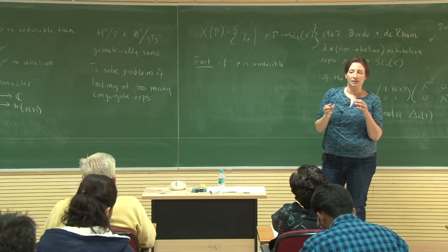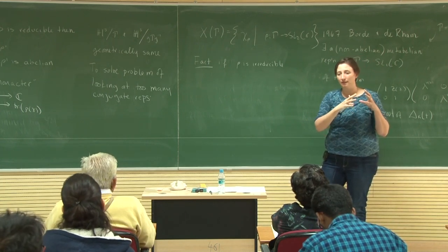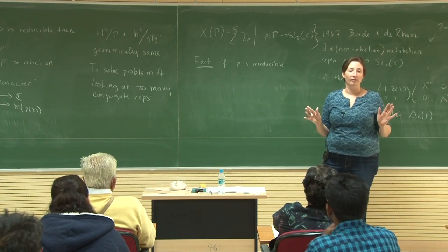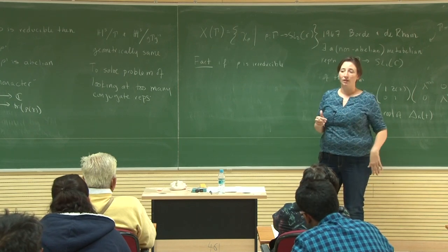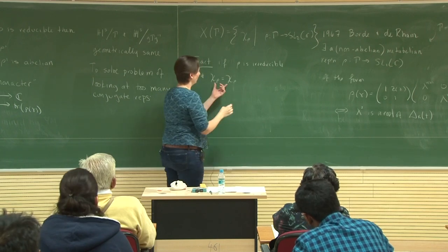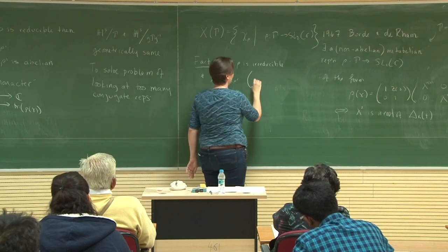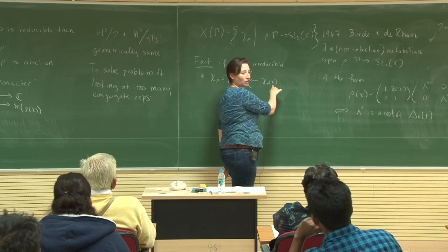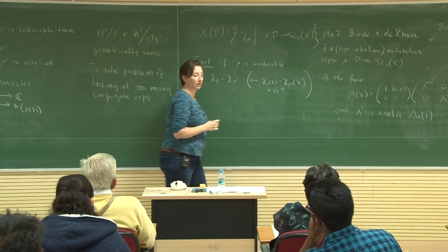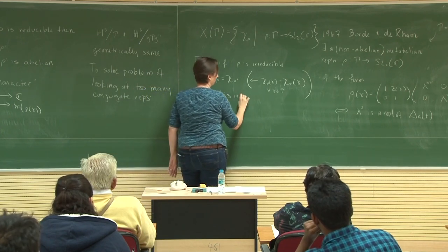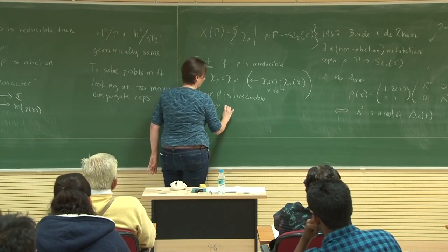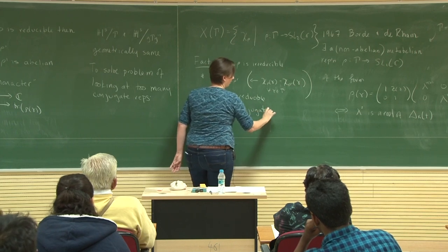A key fact: if rho is irreducible and has the same character function as rho prime — meaning the trace of rho(gamma) equals the trace of rho prime(gamma) for every element — then rho prime is also irreducible and rho and rho prime are conjugate. So for irreducible representations, looking at the character variety is exactly the same as modding out by conjugation. The only loss is more collapsing for reducible representations, but we have a good grasp of those.